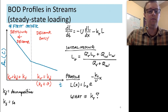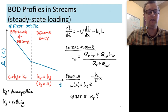And so for BOD, our world is reasonably simple. Two types of removal, settling, decomposition, and those removals may change as a function of space.